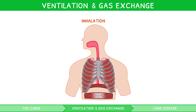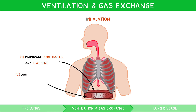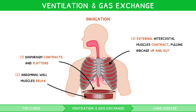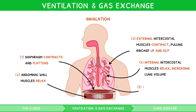During inhalation, the diaphragm contracts and flattens, moving downwards. The abdominal wall muscles relax, allowing expansion. The external intercostal muscles contract, pulling the ribcage up and out. The internal intercostal muscles relax, increasing the volume of the lungs. These all lower pressure below atmospheric pressure, and so air is drawn into the lungs.